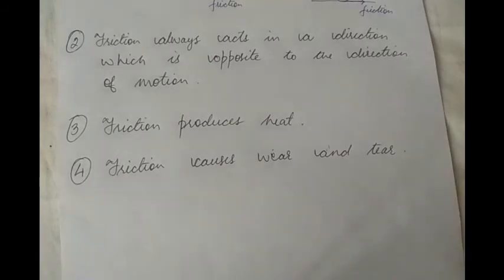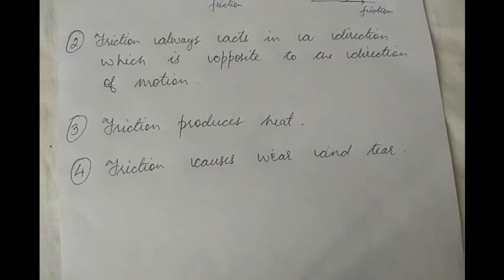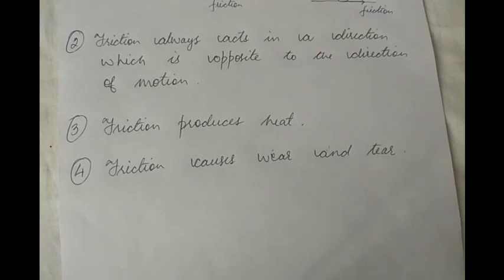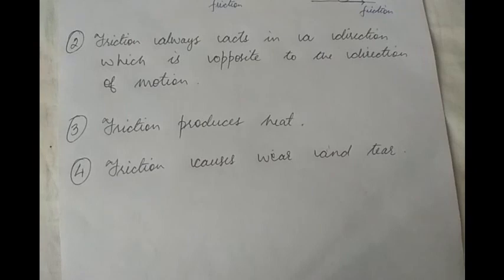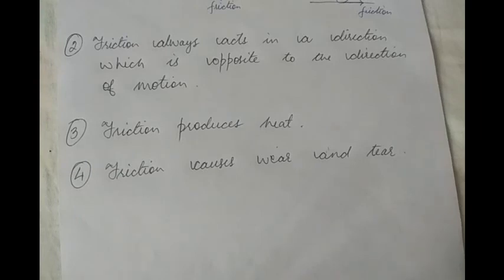You can also take the example of a duster. At the beginning of the academic year you get a new duster, but by the end of the year it wears out — it becomes very old and the soft part sometimes comes out. This happens because every day we go on rubbing the duster on the board, and that rubbing gives rise to friction which causes wear and tear, making the duster old and causing it to lose its freshness.